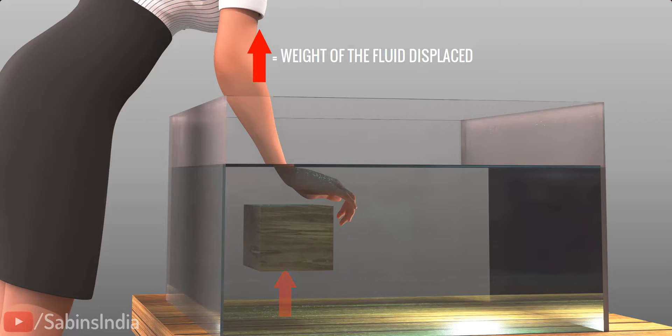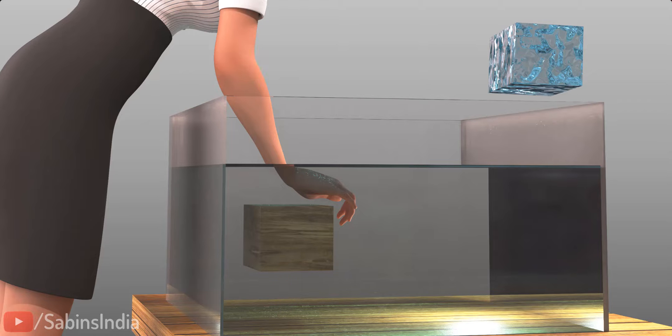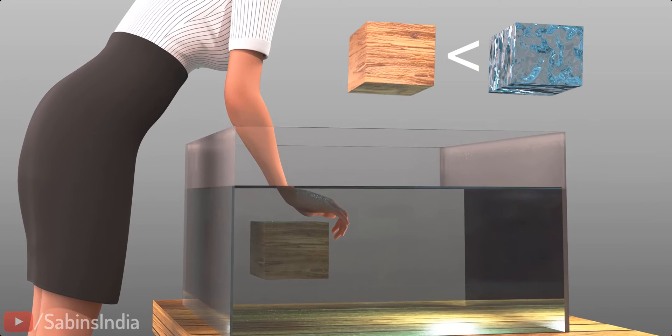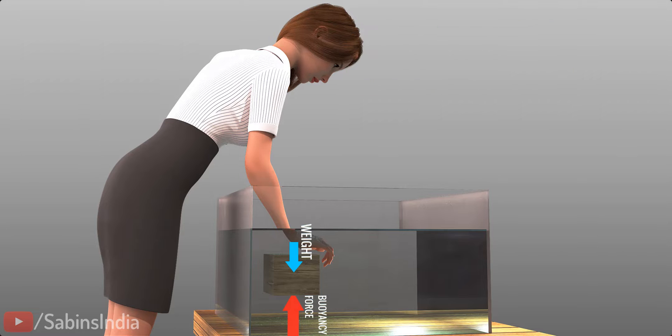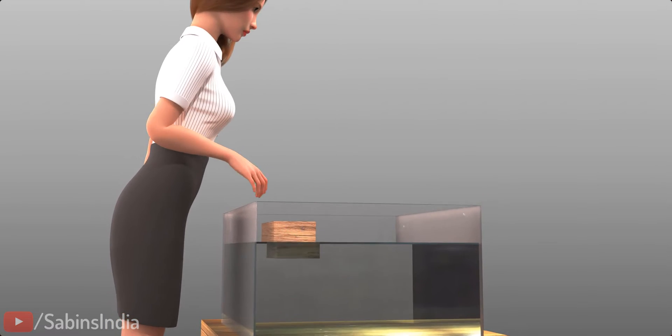Here, the water volume displaced by the block is shown. Obviously, the water volume's weight is more than the wood block's weight. This means the buoyancy force is more than the weight of the wood block, which is why the block moves upward as you release your hand.